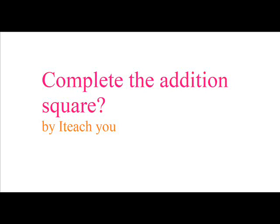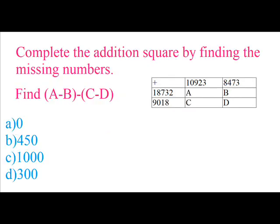Complete the addition square by finding the missing numbers. Find A minus B minus C minus D. The answer choices are: A) 0, B) 450, C) 1000, D) 300.